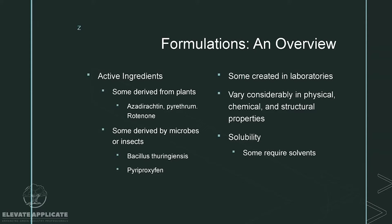The overview of formulations — active ingredients. Some are derived from plants like azadirachtin, pyrethrum, and rotenone. Some are derived from microbes or insects, such as Bacillus thuringiensis or pyriproxyfen. Bacillus thuringiensis is a bacteria used to kill caterpillars, and there are various strains — some specifically target larvae of mosquitoes. Pyriproxyfen is an insect growth regulator used with a lot of different insects, derived from their hormones.